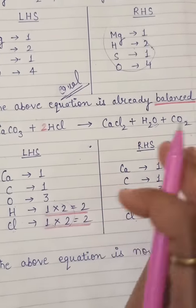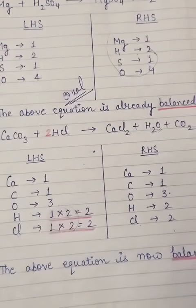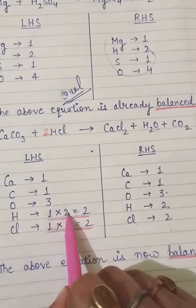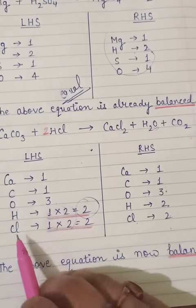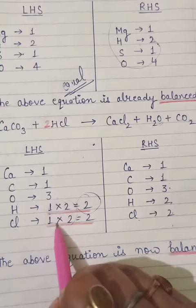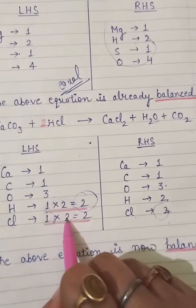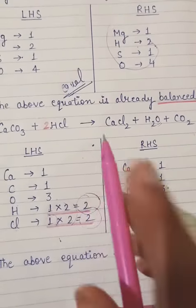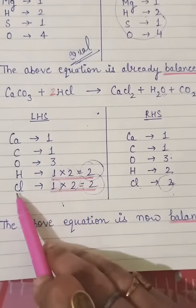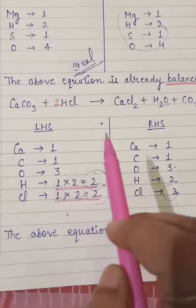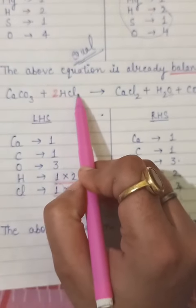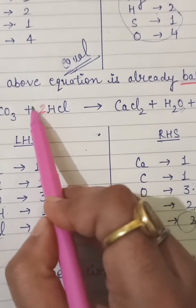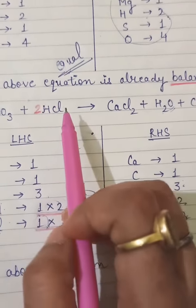Now as you can see: calcium is one, calcium is one - no problem. Carbon is one, carbon is one - no problem. Oxygen is three, no need to do anything. But look at H - I have written one here and it's two there. Simple logic: you have to remember that in chemical equations we have to do multiplication, not division. Think how can you make one into two? Multiply one by two and it automatically becomes two. Same with chlorine - one here and two there. Multiply one by two to get two. So multiplication is possible, division is not possible.